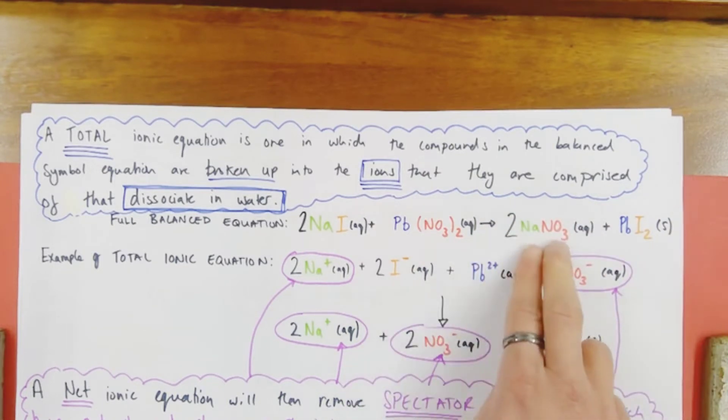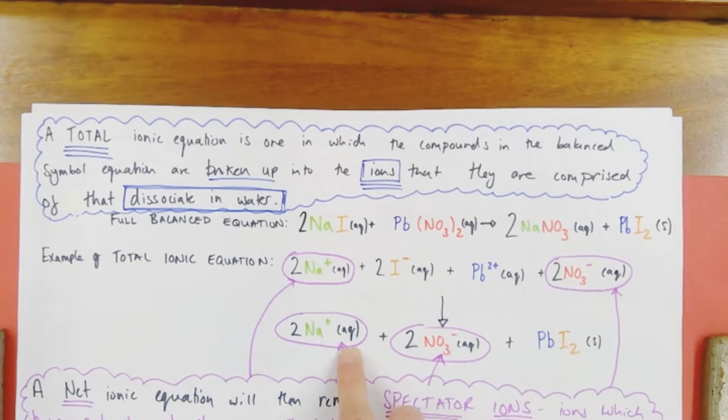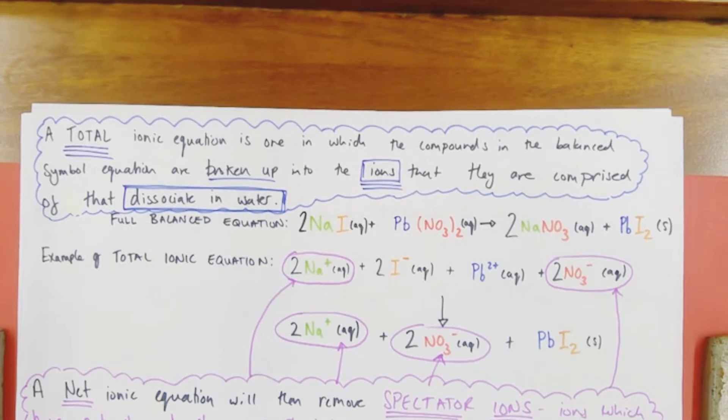And on the other side of my equation, I can break my sodium nitrate up into sodium ions again, two of them, and two nitrate ions. And I haven't broken up my lead iodide because it is insoluble in solution. It won't dissociate into its ions in water, so it can be left as a solid. So any insoluble product can be left as itself in my total ionic equation.